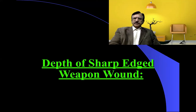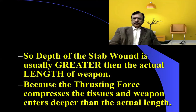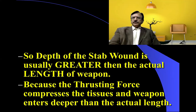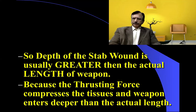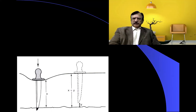Regarding the depth of the stab wound, external examination will not give an idea about the depth. Depth is proportional to the thrusting force. The depth is usually greater than the actual length of the weapon because the thrusting force compresses the tissues, allowing the weapon to enter deeper than its actual length. The diagram shows the thrusting force compressing tissue with the tip exiting the other side.